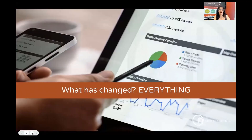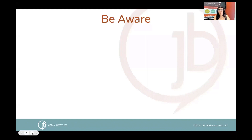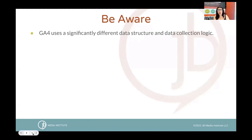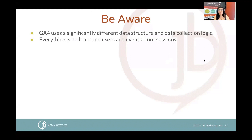Even though this is a big learning curve, there are some really powerful changes that are exciting about this new system and this new paradigm of thinking when it comes to tracking and reporting. So what's changed? Basically everything. Google Analytics 4 really changes the data structure we're used to and the data collection logic. Our language is changing, the layout of how we look at analytics is changing, and everything is built around users and events, not sessions.